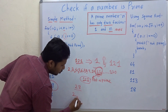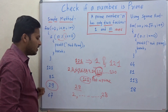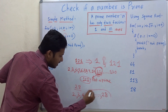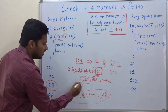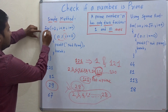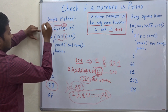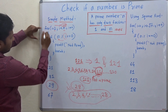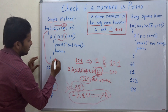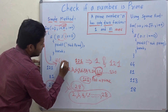So checking from 2 to 29 means numbers up to 28. Whether 2 divides 29 — no. 3 no, 4 no, 5, 6... till 28 we check. Any number from 2 to 28 does not divide 29. So this for loop from 2 to 28 is complete. After the for loop ends, we come outside and check if i equals n.